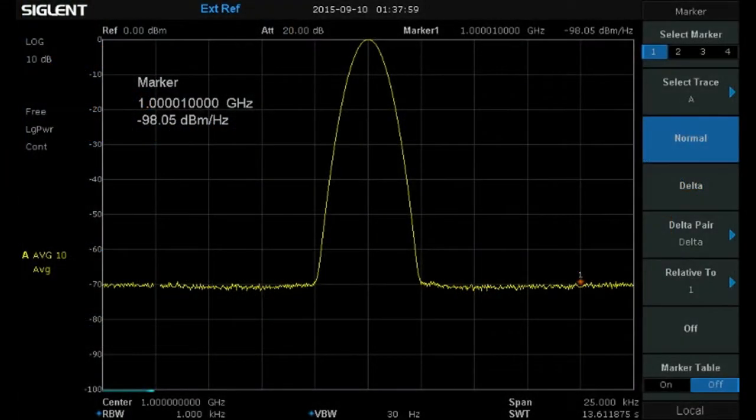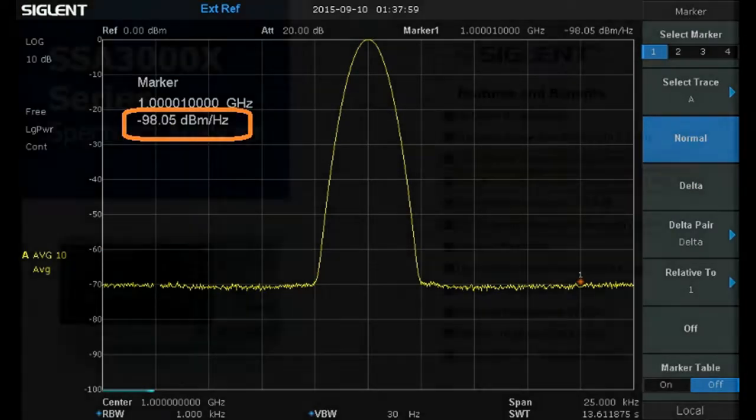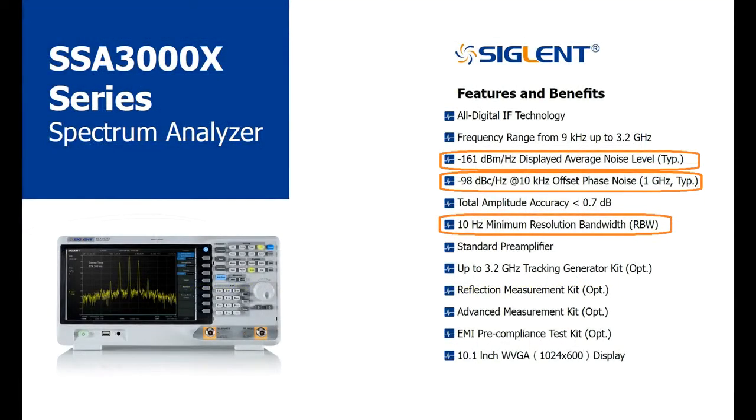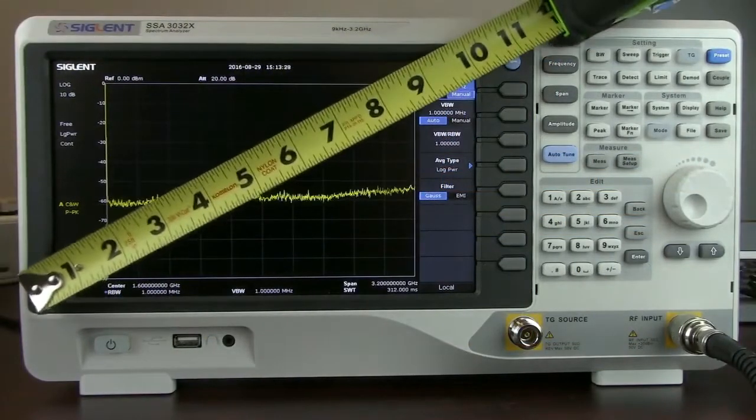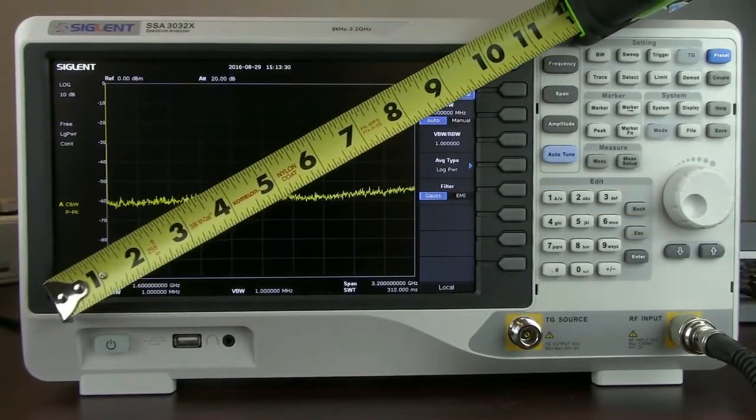The SSA 3000X delivers with respectable phase noise of minus 98 dBc per hertz at a 10 kHz offset. The SSA 3000X also features a 10 inch WVGA display and it does measure a full 10 inches or 10.1 and we've got about 7 inches of actual trace area.